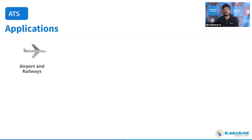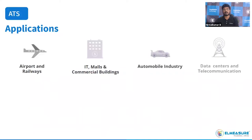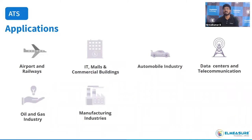Applications include airports and railways — we have supplied 20-plus ATS over 8 years in India, including Hyderabad International Airport, and recently took an order for Kuna International Airport. In Mumbai, one commercial building alone will receive 150 units of 125A ATS. Other applications include automobile industries, data centers, telecommunications, oil and gas (80 ATS with RS-485 supplied to Indian Oil Corporation), food processing, pharma, healthcare, and banking and finance.